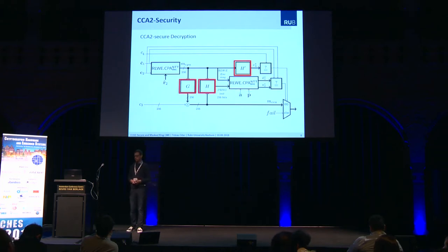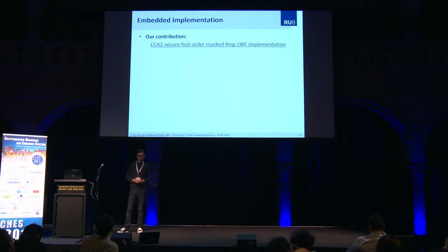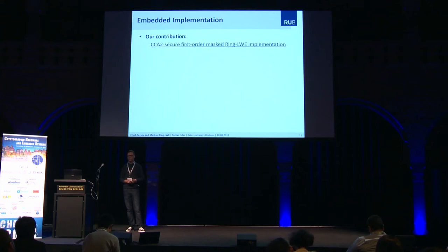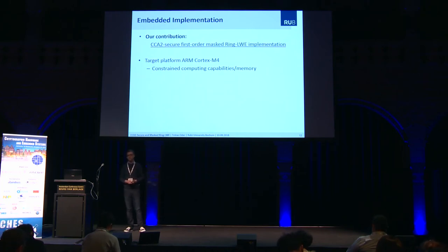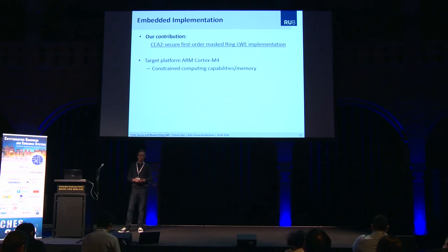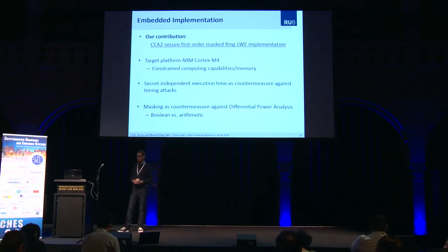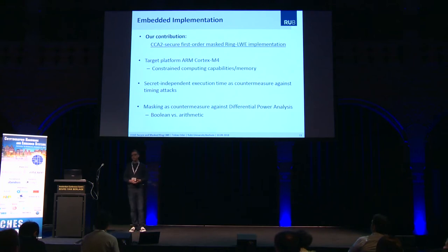There are also some hash functions involved, and then we are basically done with the conversion. To summarize the contribution of our work: we present a microcontroller implementation of a CCA2 secure first-order masked Ring LWE scheme. We chose the ARM Cortex-M4 microcontroller as the target platform, which has constrained computing capabilities and memory resources. We applied countermeasures to timing attacks by ensuring our implementation has an execution time independent from any secret value, and we also applied masking countermeasures.